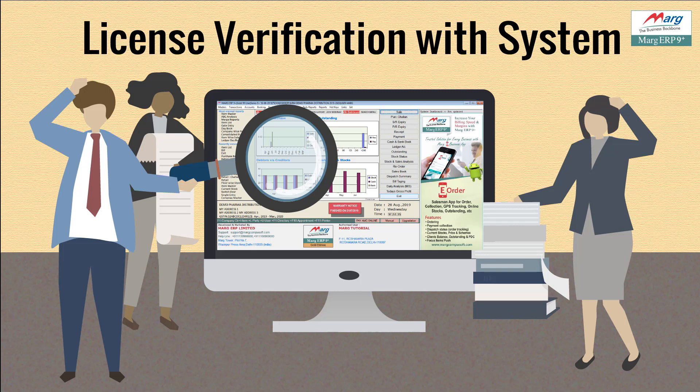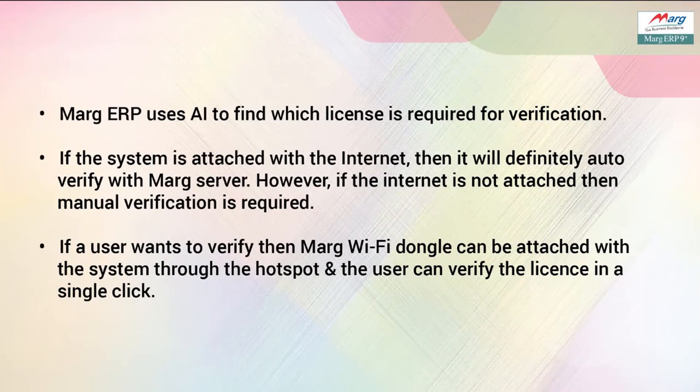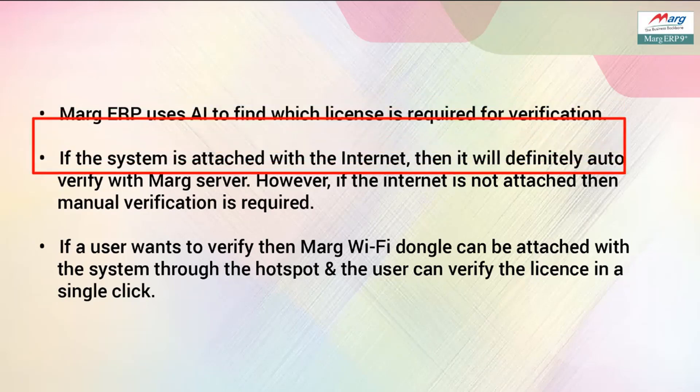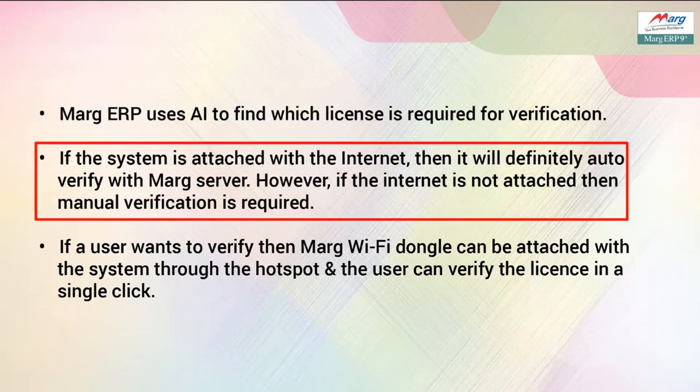Before knowing the process of license verification, let us discuss why doing license verification is necessary. License verification checks that the license details — like exception code, mobile number, and email ID — which were updated on the server at the time of license creation match the license details displayed on the software. It also helps to know if any other person is misusing the license. Mark ERP uses AI, meaning artificial intelligence, to verify the license.